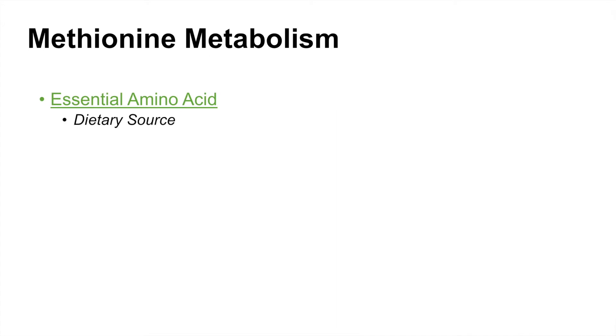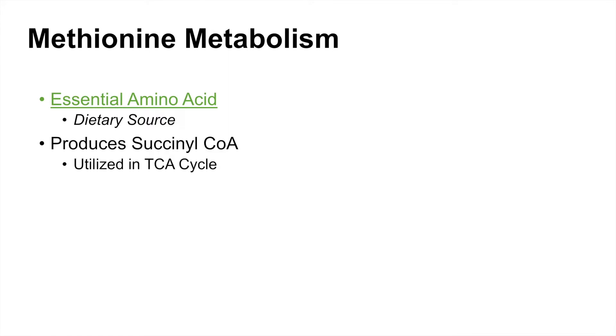Hey everyone, in this lesson we're going to talk about methionine metabolism. Methionine is an essential amino acid, which means that we need to get it from a dietary source. In the process of methionine metabolism, methionine generates succinyl-CoA, and succinyl-CoA can be utilized in the TCA cycle to generate ATP.